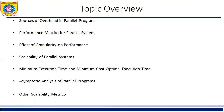Sometimes the process remains idle. Processing elements in a parallel system may become idle due to many reasons such as load imbalance, synchronization, and presence of serial components in the programs. In many parallel applications, when task generation is dynamic, it is impossible or at least difficult to predict the size of subtasks assigned to various processing elements. Hence, the problem cannot be subdivided statically among the processing elements while maintaining uniform workload, resulting in load imbalancing.